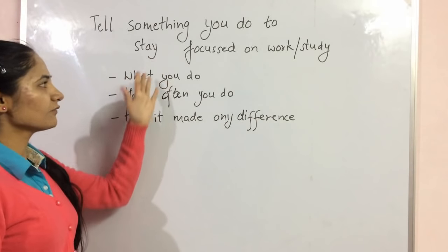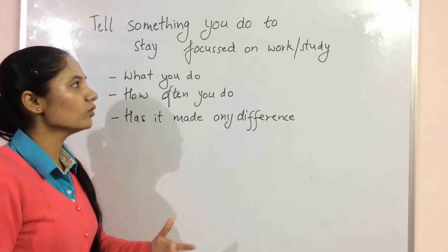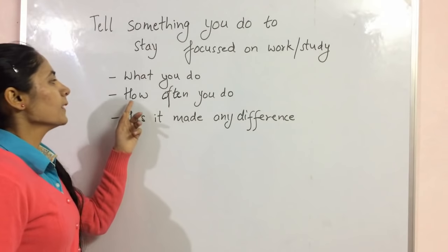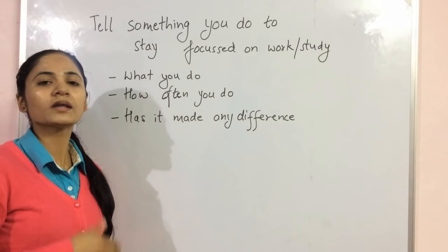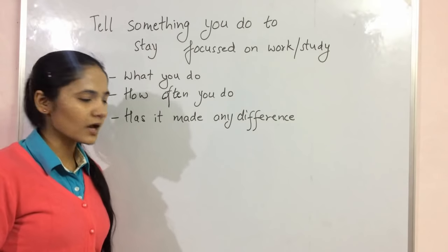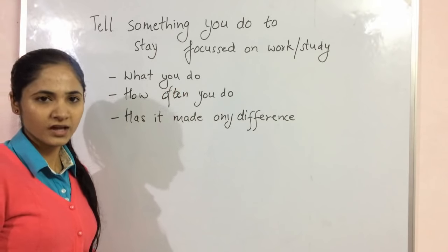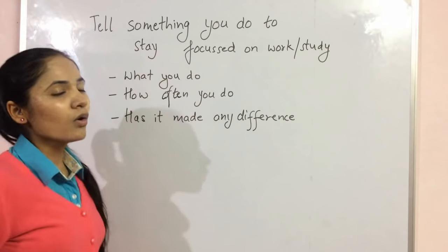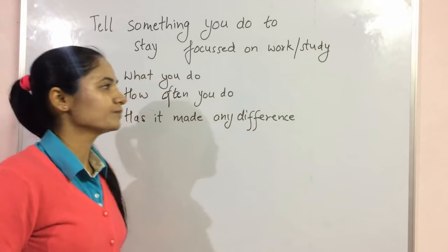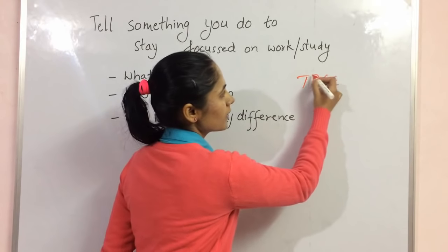So the hints that we have: first, what you do — what activity do you do to stay focused on work or study. Then, how often you do it — how many times do you do it. And the last one is has it made any difference — has this activity brought any change. So how does a band nine student prepare this cue card? The method they apply is the tree method.